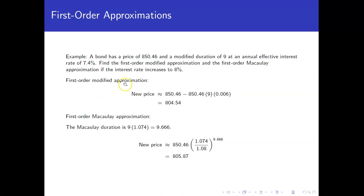All right, so for our first order modified approximation, we're going to take the old price and subtract off the old price times the modified duration times the change in the interest rate, which in this case would be 0.006 because we went up six tenths of a percent, which gives us a new price of $804.54.